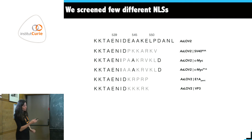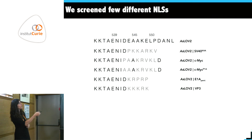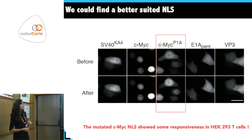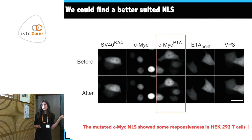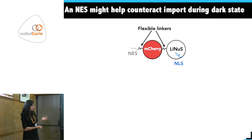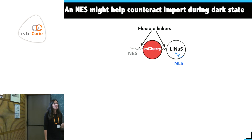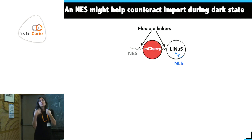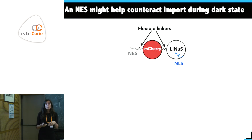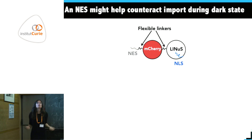First we tried different NLSs — going to the literature and creating another small library. We found one variant that was responsive, with light-dependent accumulation that was a good beginning. The biggest design change was then to introduce an NES — a nuclear export sequence — as the opposite of the NLS. Whenever the protein goes spontaneously into the nucleus, the NES is also always exposed and tells the export machinery to bring it back out.